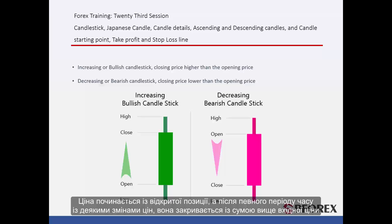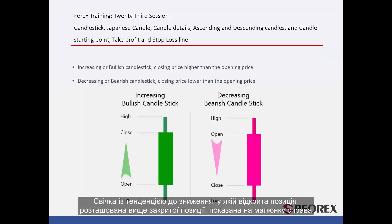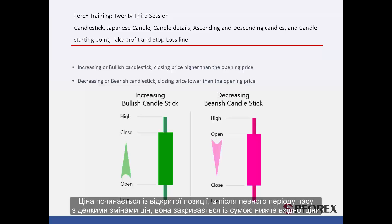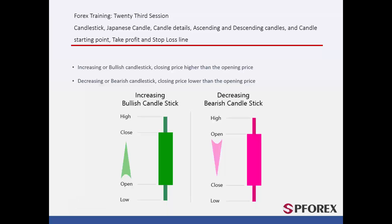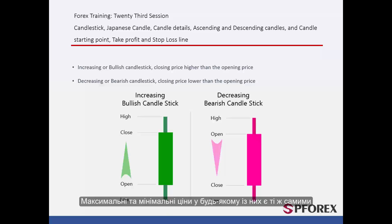After a period of time, with some price changes, it closes with an amount higher than the entry price. In decreasing or bearish candlesticks, the open position is located higher than the closed position, as shown in the right figure. Price starts from the open position; after a period of time with some changes, it closes with an amount lower than the entry price. High and low prices in either of them are the same.